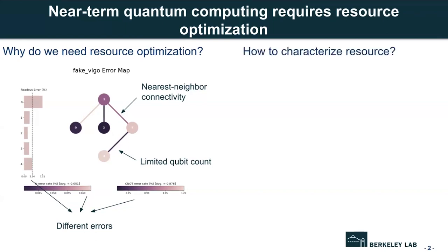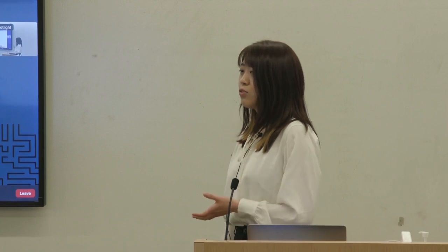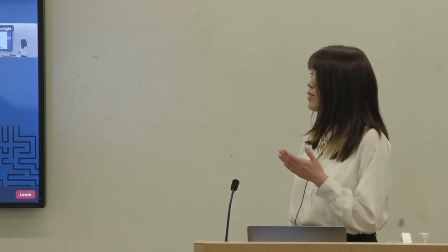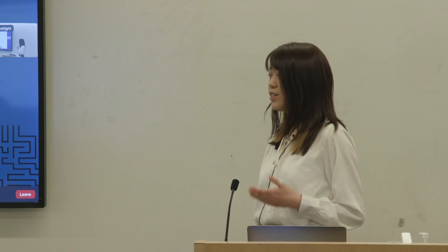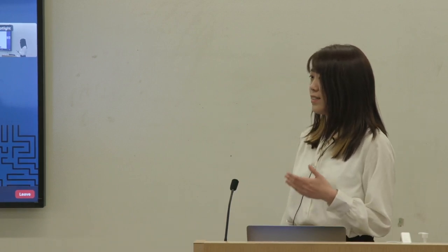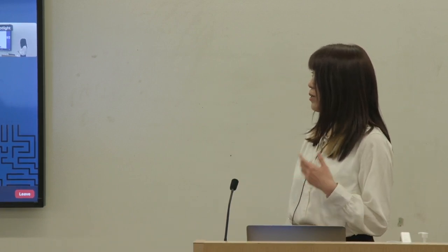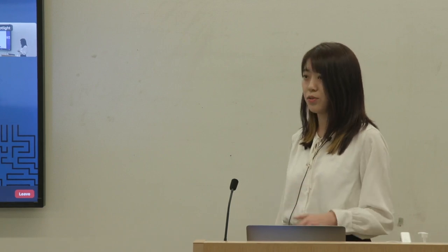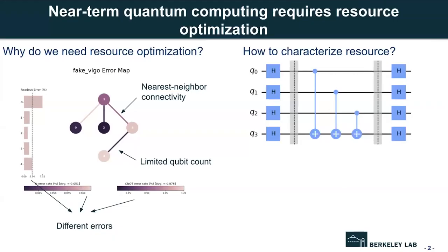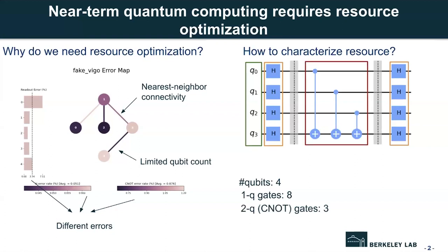So how do we characterize the resource? Given a quantum algorithm, usually we first translate it into a quantum circuit and then we run the circuit on the hardware. So here our focus is at the circuit level. Now I will explain how to characterize the resource for a quantum circuit. Here is an example of a quantum circuit. Each line represents a qubit. We can see we have four qubits here. And these are the single qubit gates since it only includes one qubit. And these are the two qubit gates also called CNOT gates. It includes two qubits.